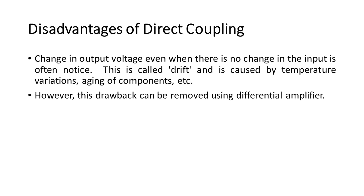A change in output voltage even when there is no change in the input is often noticed. This is called drift, and is caused by temperature variations and aging of components. However, this drawback can be removed using a differential amplifier.